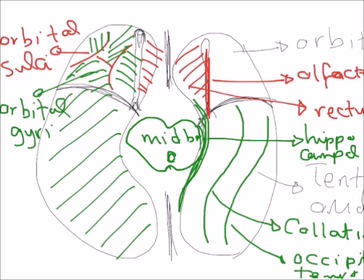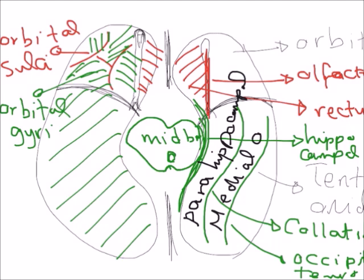The gyri on the tentorial surface include: the parahippocampal gyrus, lying between the hippocampal sulcus and the collateral sulcus; the medial occipital temporal gyrus, lying between the collateral and the occipitotemporal sulcus; and the lateral occipital temporal gyrus, lying lateral to the medial occipital temporal gyrus.